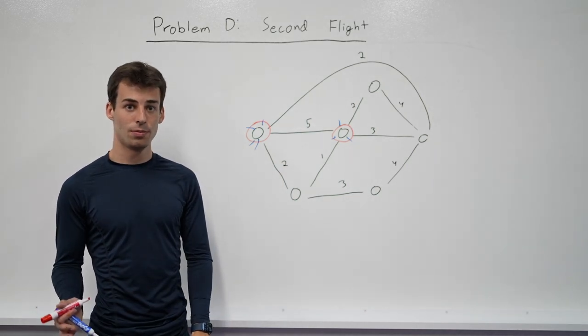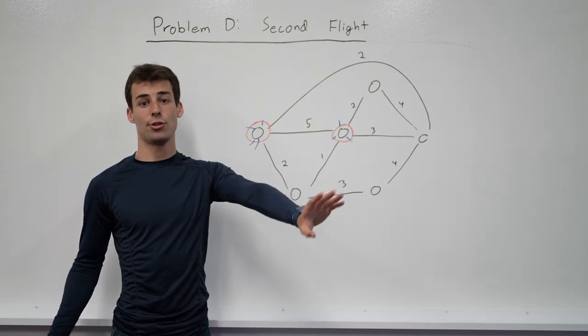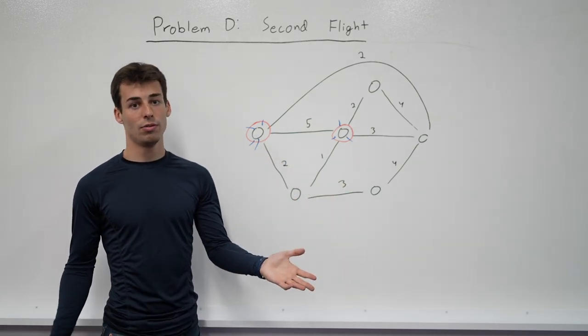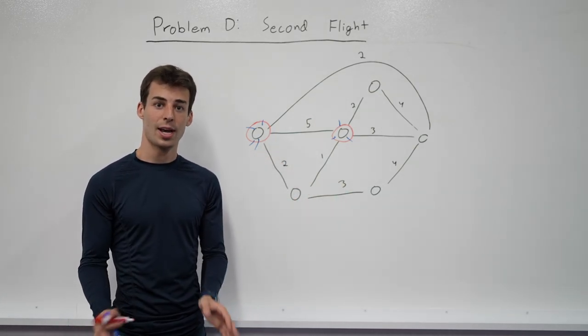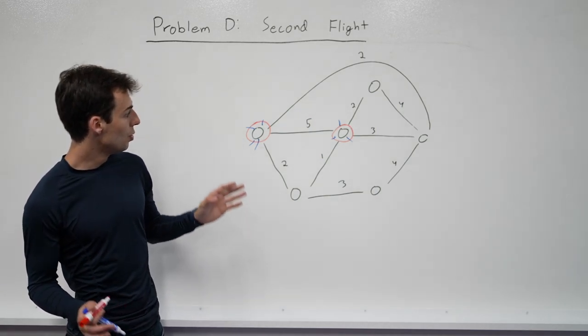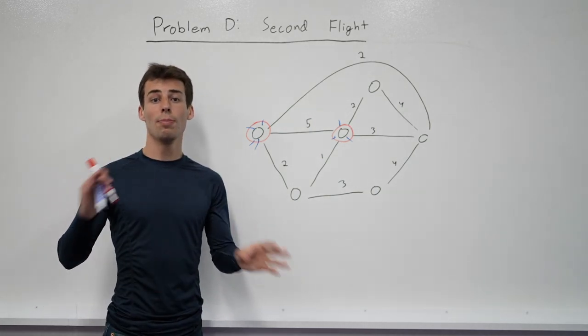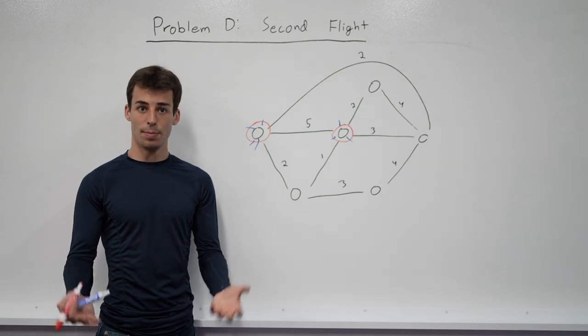In total, there are only square root n big nodes. So for each big node, we traverse all the edges two times, and there are only square root of them, we're still with an n root n runtime. So we're still okay there. So we can pre-compute the answer for all pairs of nodes where one of them is a big node.